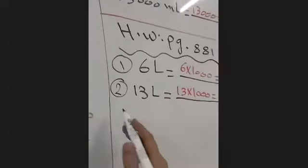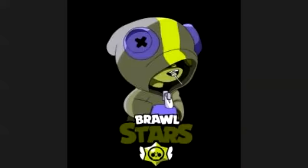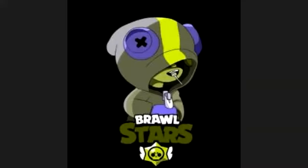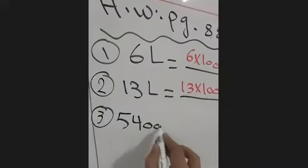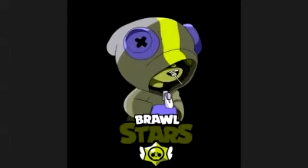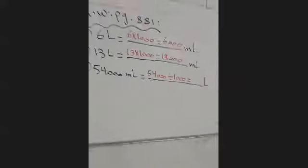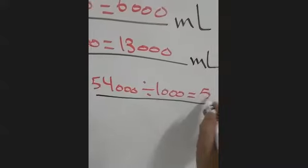This is question two. Let's go to question three. In page 881: 54,000 milliliters equals how many liters? We divide 54,000 by 1,000. Cross the zeros — 54,000 divided by 1,000 equals 54 liters. Excellent.